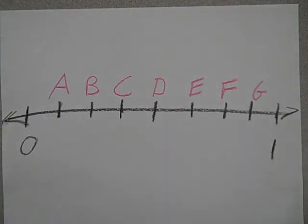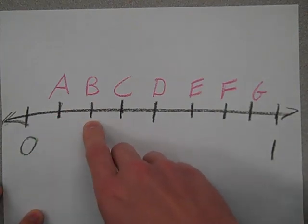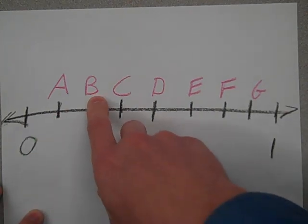Look at this number line. Where should two-eighths go? One-eighth, two-eighths. Two-eighths should go at B.